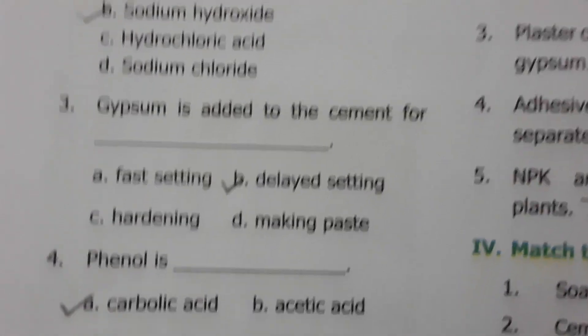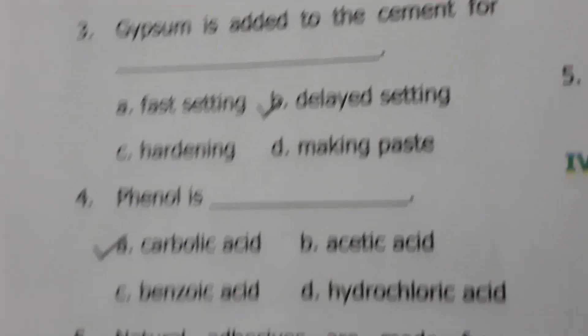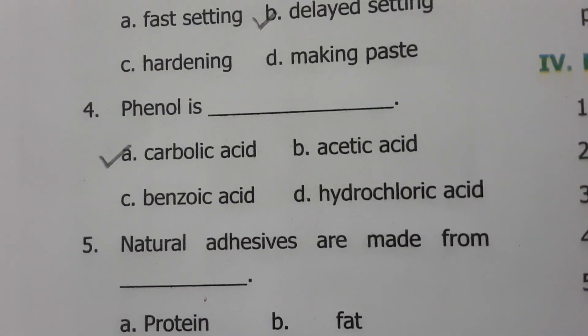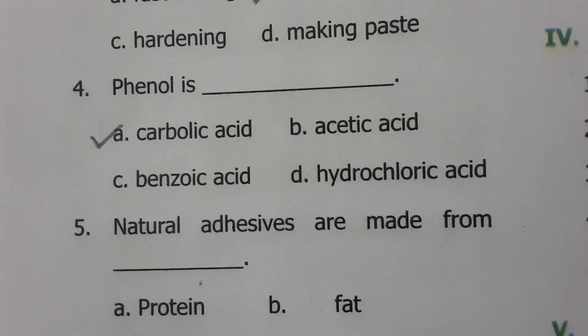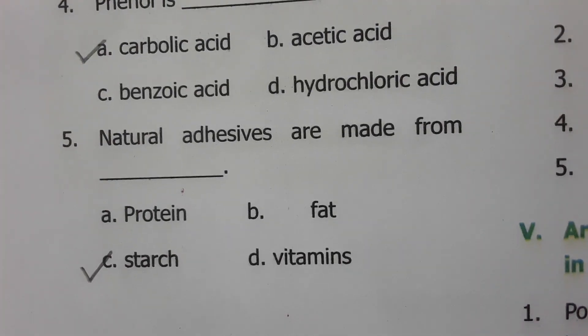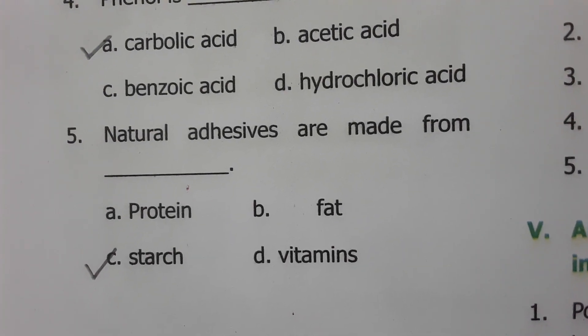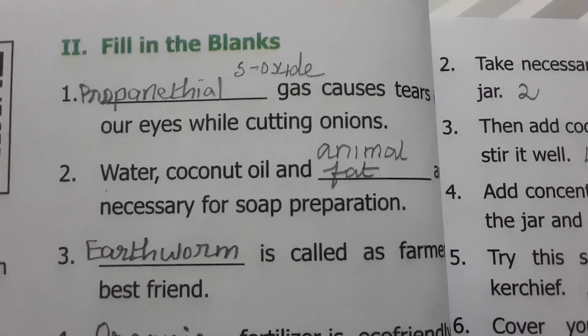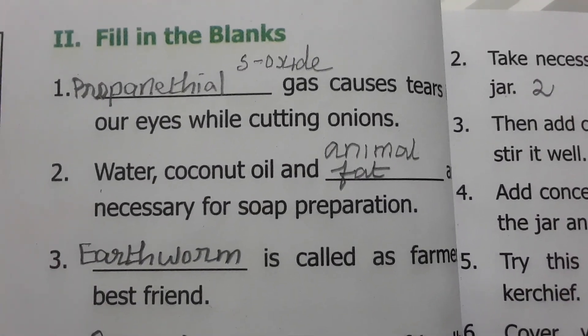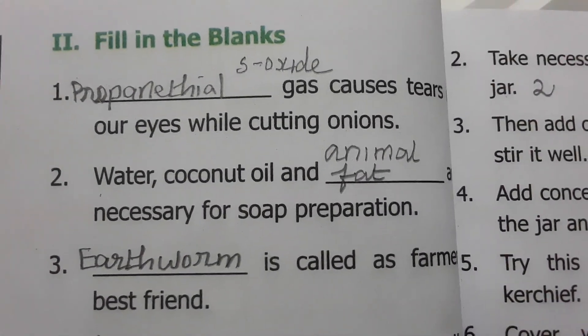Phenol is carbolic acid. Natural adhesives are made from starch. Fill in the blanks: Propanethial S-oxide gas causes tears in our eyes while cutting onions because the onion contains propanethial S-oxide.